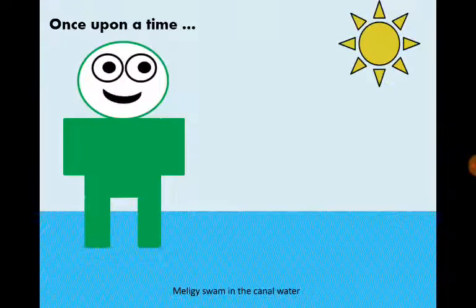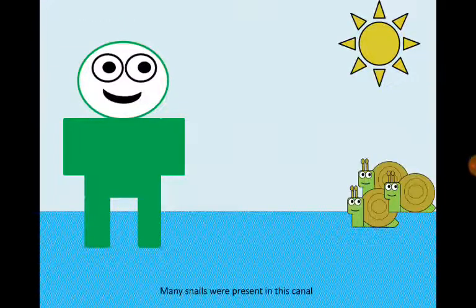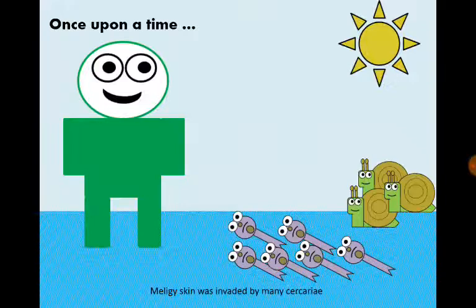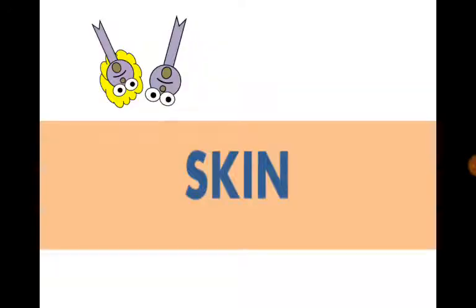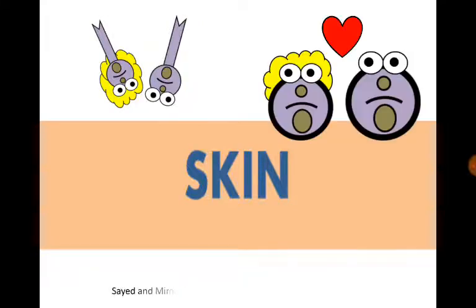Once upon a time, Meligi swam in the canal water in Egypt. Many snails were present in this canal, and cercariae were also present. Meligi was invaded by many cercariae. Among those cercariae were Sayed and Mimi. Mimi penetrated Meligi and Sayed followed her. Sayed and Mimi lost their tails and became schistosomula.